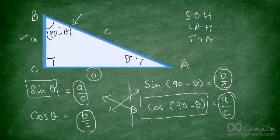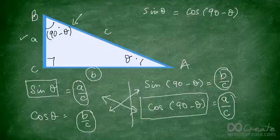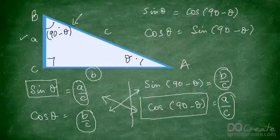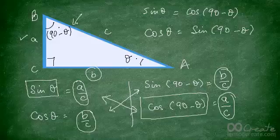This brings us to the conclusion that sine theta is equal to cos of (90 minus theta), and that cos theta is equal to sine of (90 minus theta). This is very important: sine of theta is always equal to cos of (90 minus theta), while cos of theta is always equal to sine of (90 minus theta).